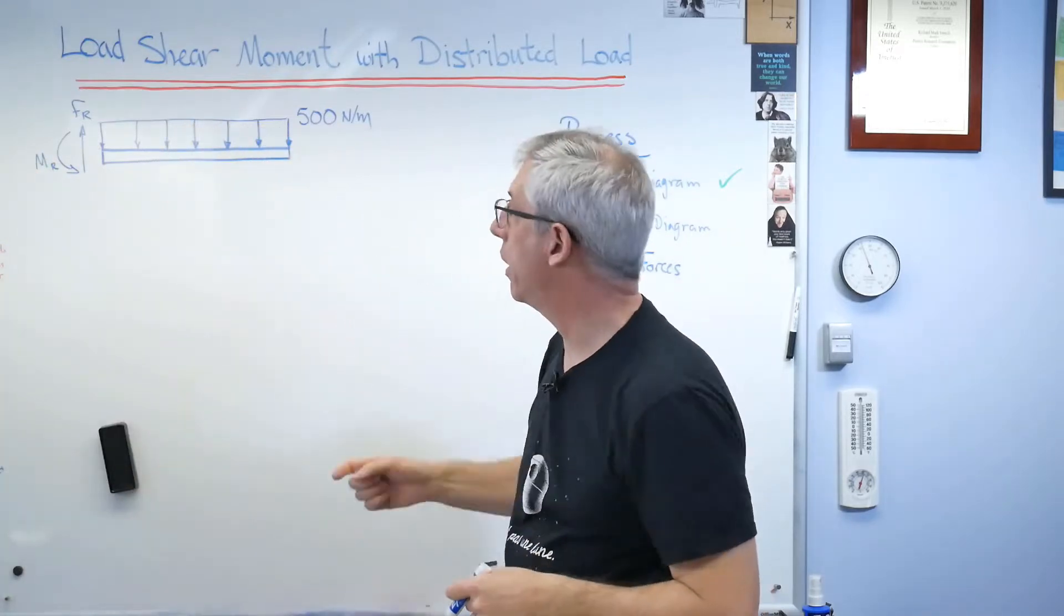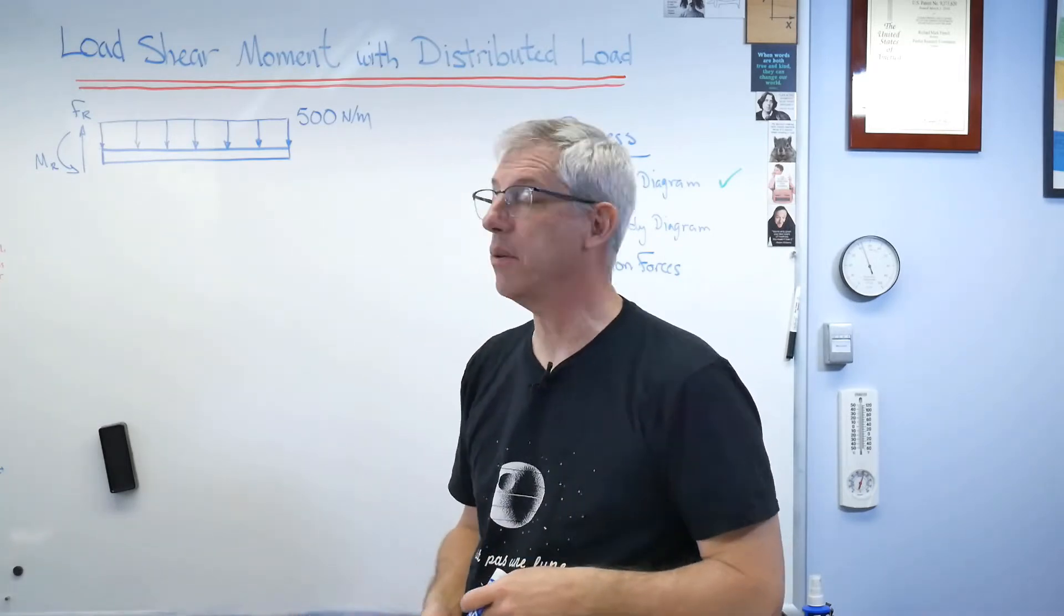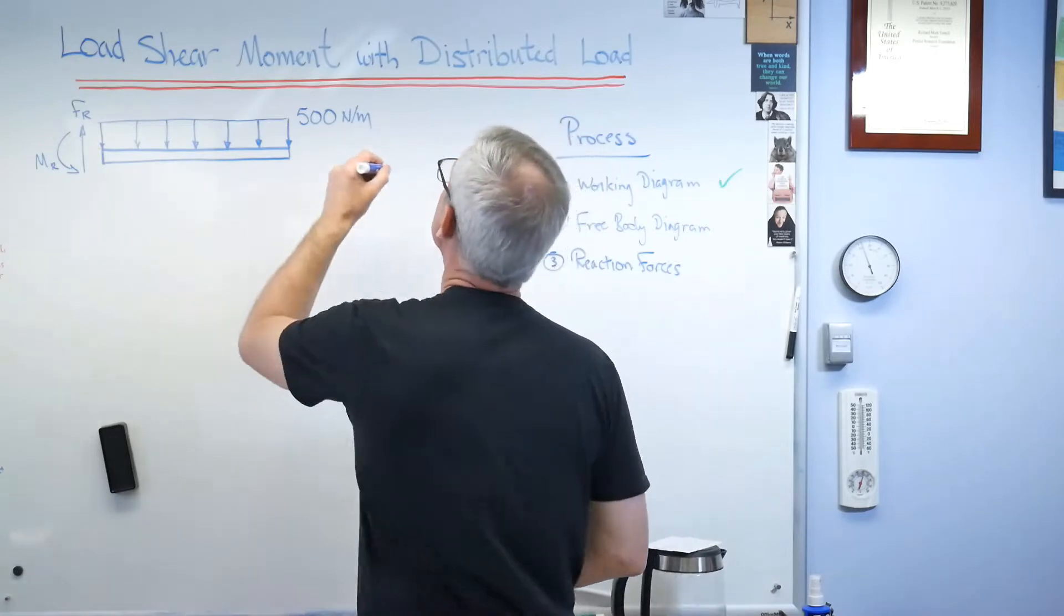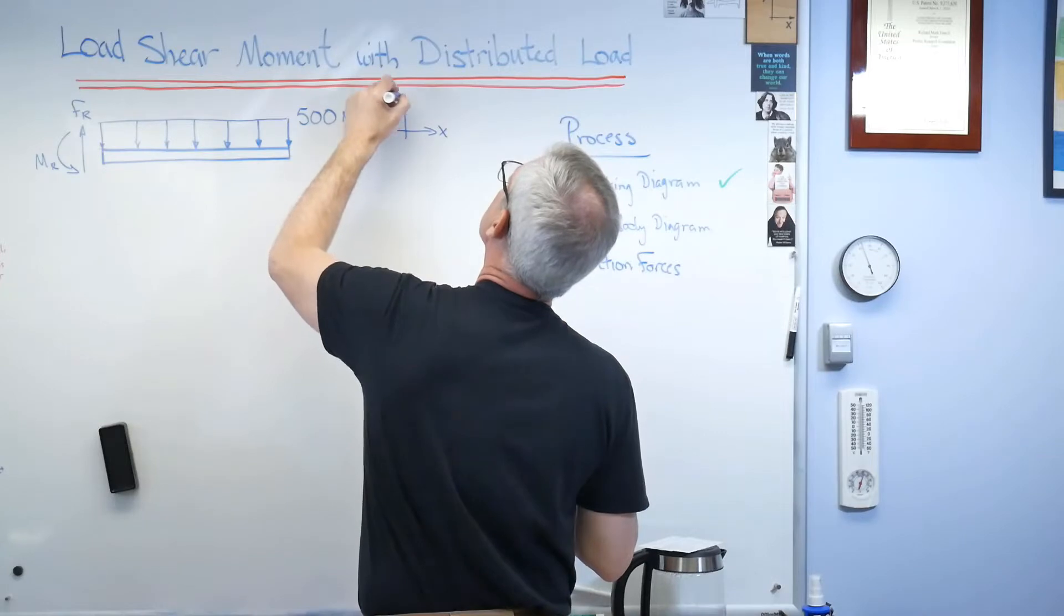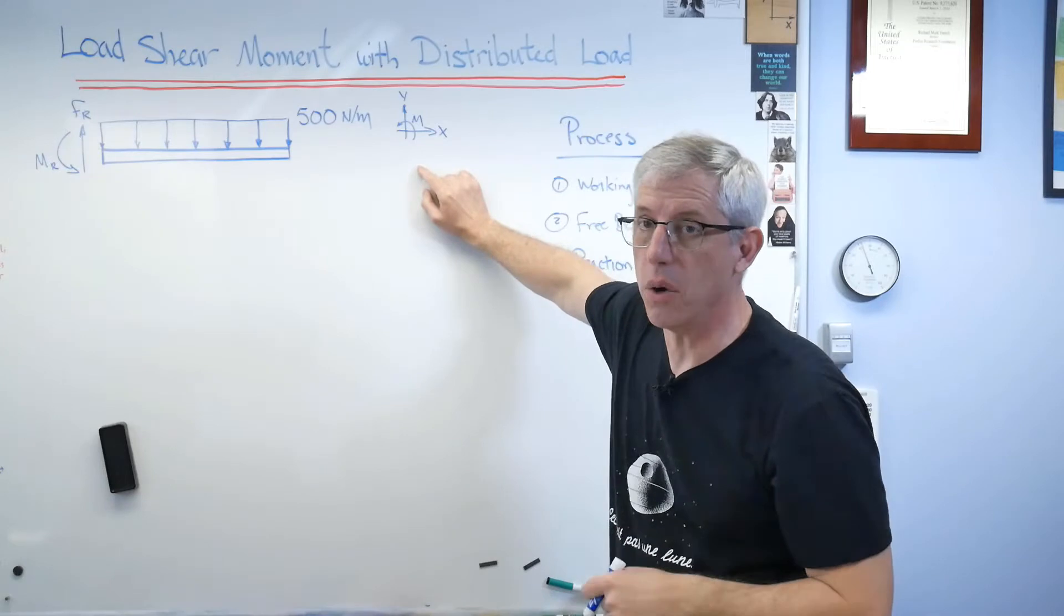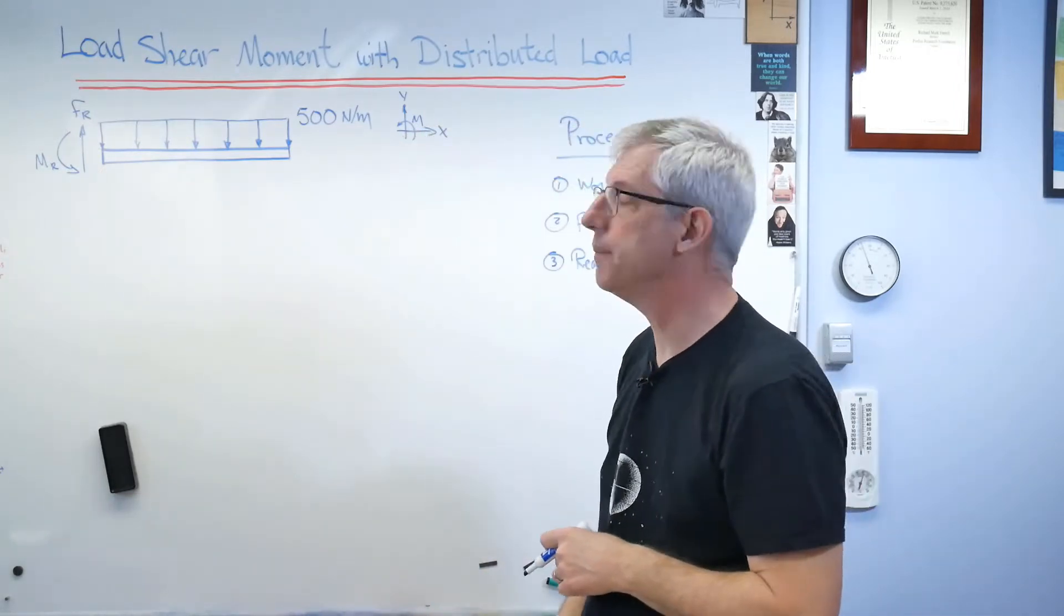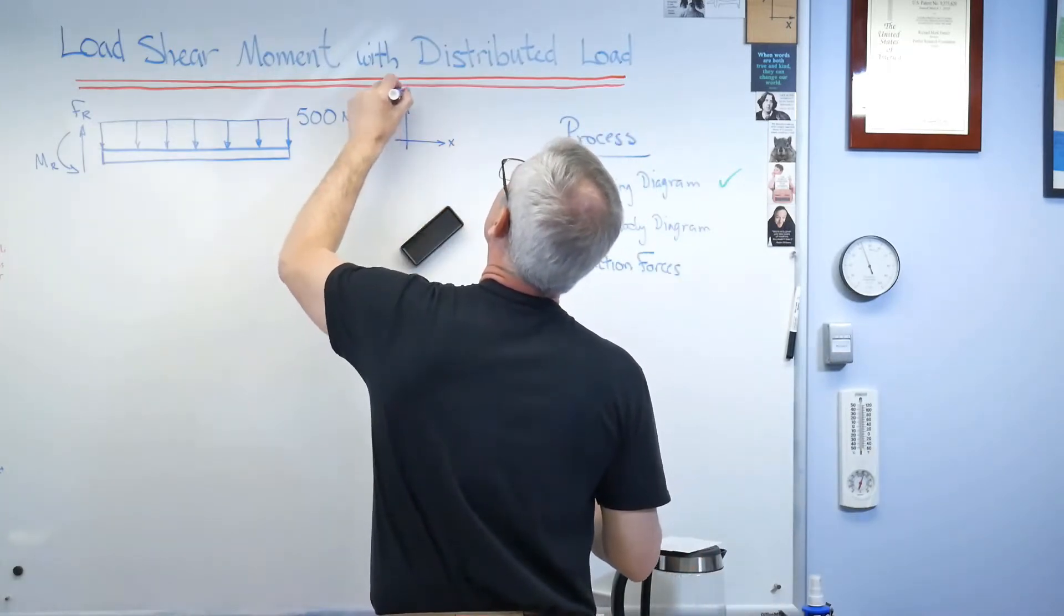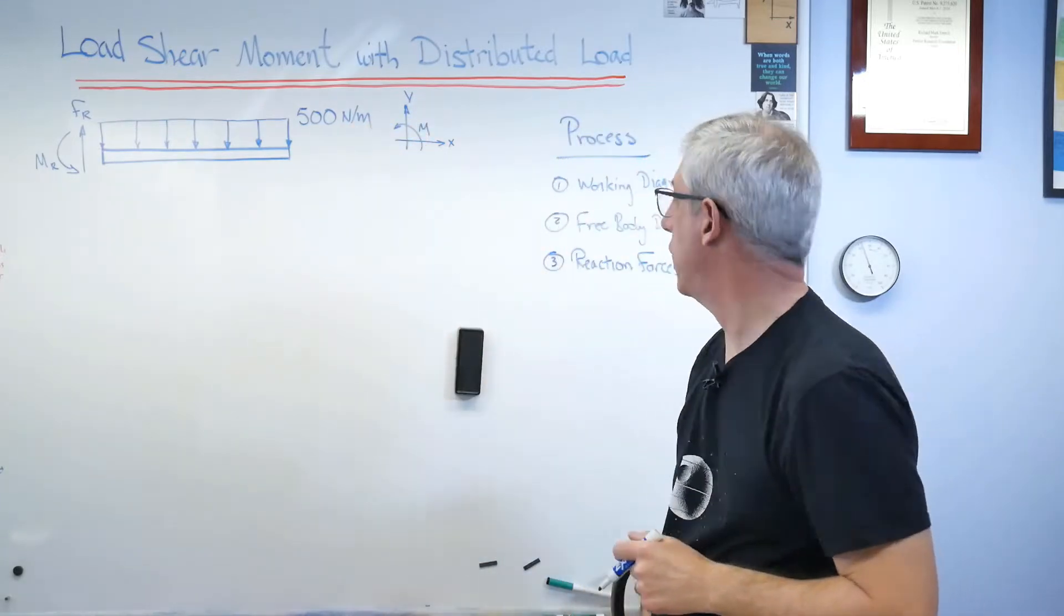So there's the reaction force, and there's the reaction moment. I'm going to need to know whether these are in positive or negative directions. Well, how do I do that? I need a sign convention. So I'm going to put the positive sign convention up here. Here's x, here's y, and here's the moment. That's positive sign convention. That's not the origin. The origin's over here, the way I drew it. But that's the positive directions. Let me make that a little bigger so you can see it better. There. That's better. So there's my free body diagram. So I got that done.